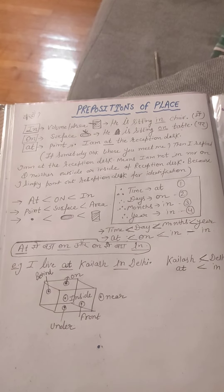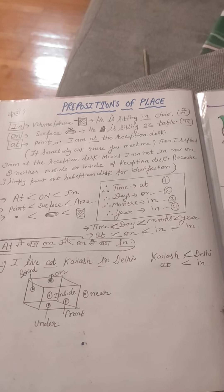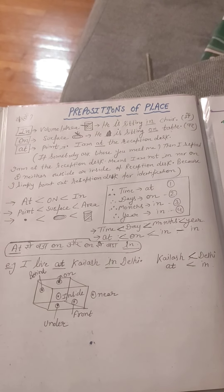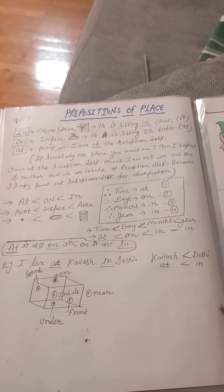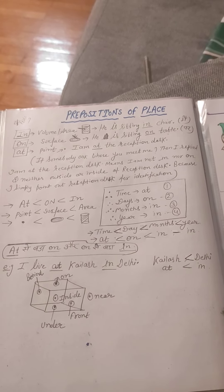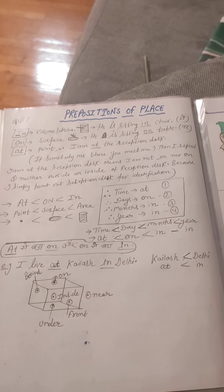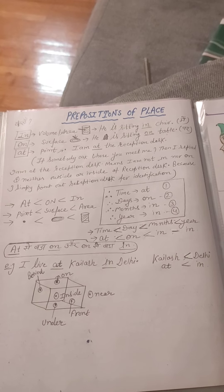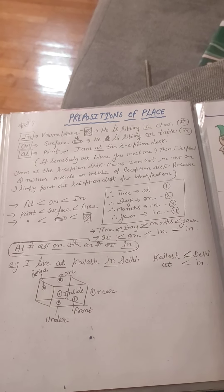At — point. I am at the reception desk. If somebody asks where you meet me, then I reply: I am at the reception desk. Means I am not in, nor on, and neither outside or inside of the reception desk, because I simply point out the reception desk for identification.